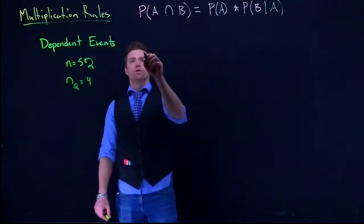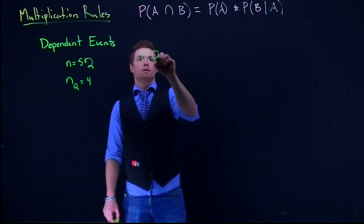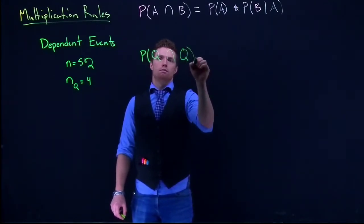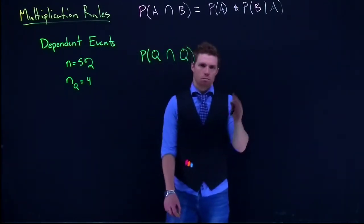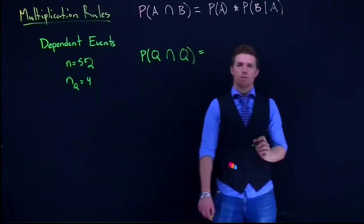So we're going to do what's the probability of drawing a queen and another queen. Queen on the first pull, queen on the second pull. Alright, so let's look at what this probability is going to equal.